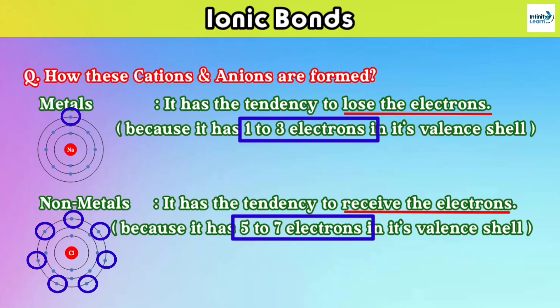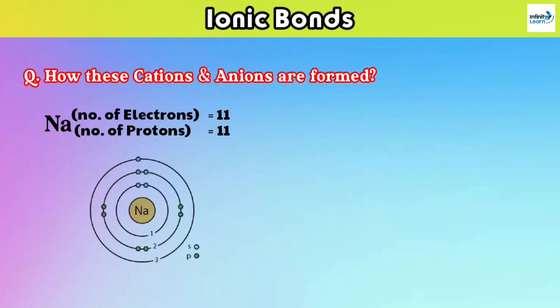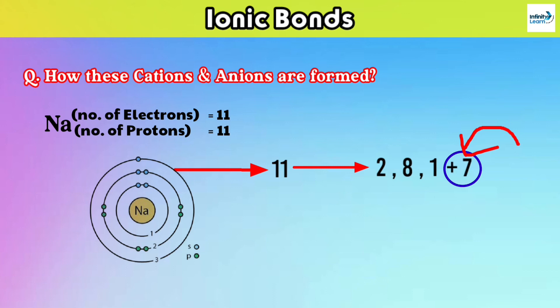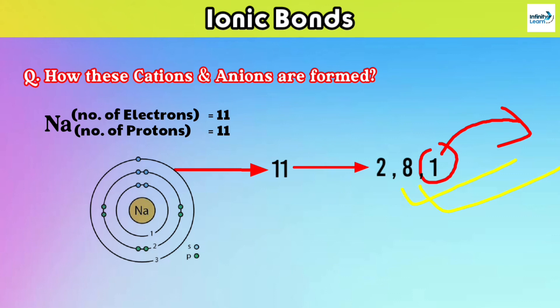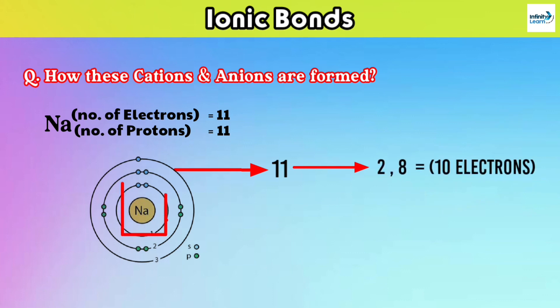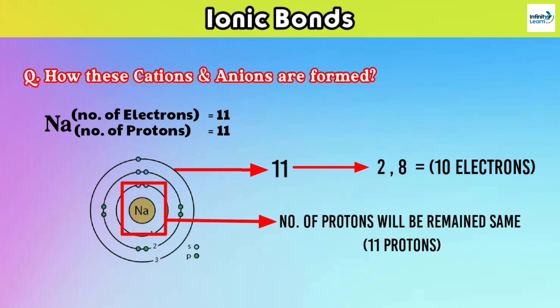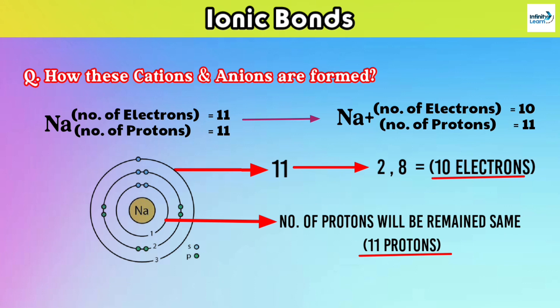For example, the atomic number of sodium is 11, so its electronic configuration is 2, 8, 1. For stability, it has two options: receive seven electrons from another atom or donate one electron. It will choose to donate one electron because it is much easier than receiving seven. After donating, it has 10 electrons but still 11 protons, so the number of protons exceeds electrons, giving it a positive charge — making it a cation.